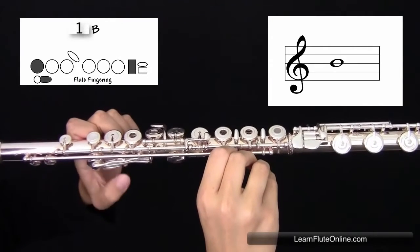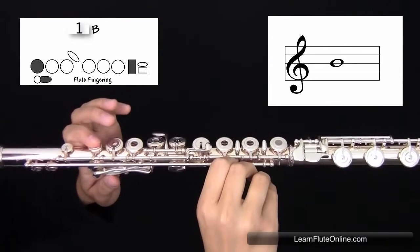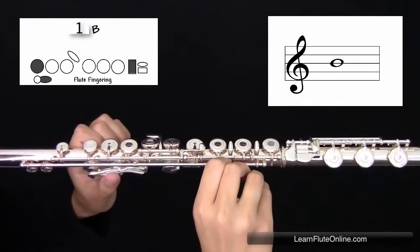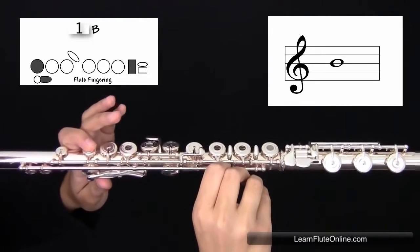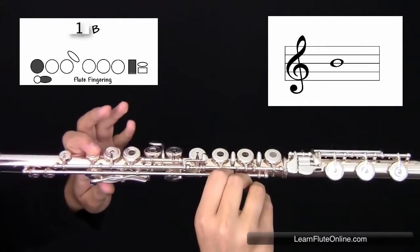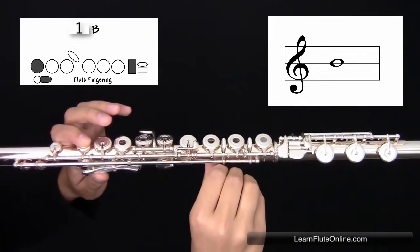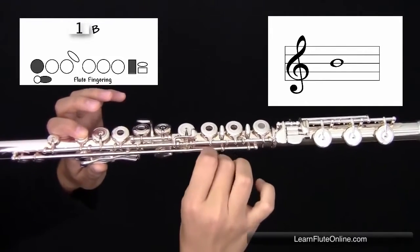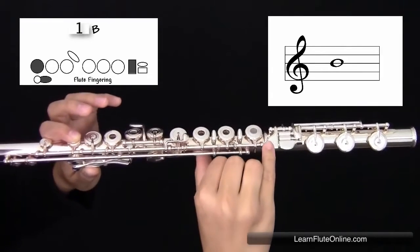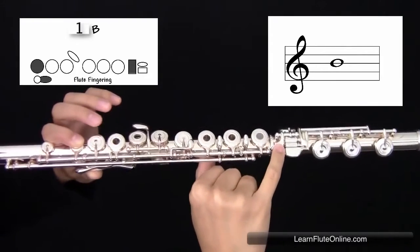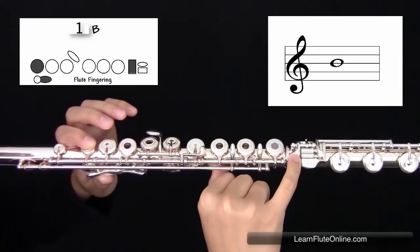In the first octave, starting with the left hand, you're going to have your thumb and first finger, skipping your second, third, and pinky. In the right hand, you're going to skip your first, second, and third fingers, placing your right hand pinky on the first key on the foot joint. It should sound like this.